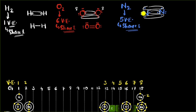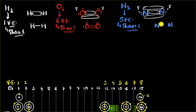If you count the electrons, each nitrogen atom has access to eight electrons, so the octet rule is satisfied. The final Lewis dot structure has a triple bond, and do not forget the lone pairs — never ever forget the lone pairs.